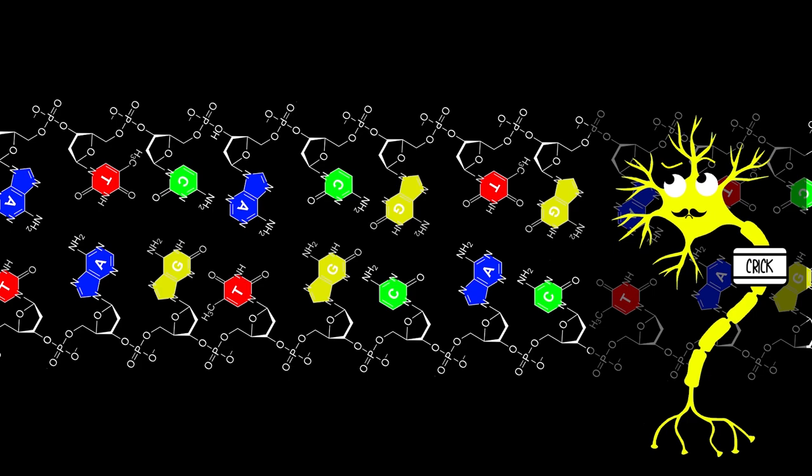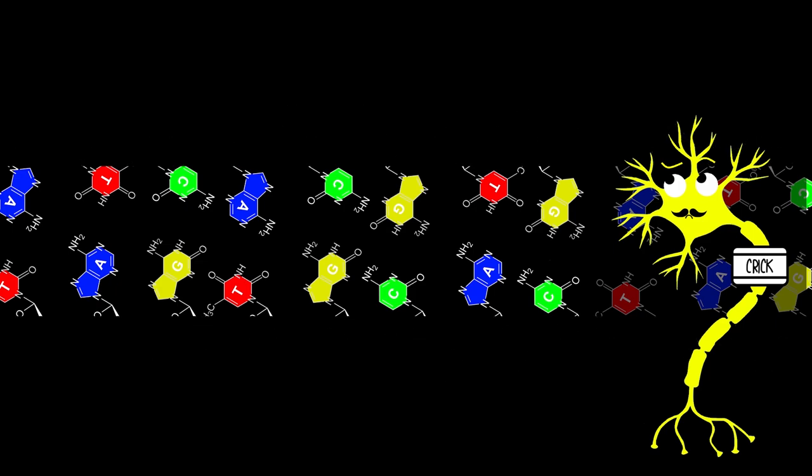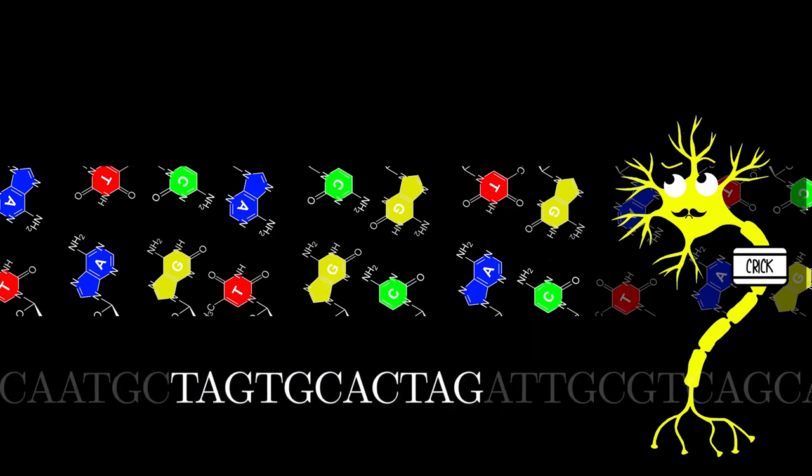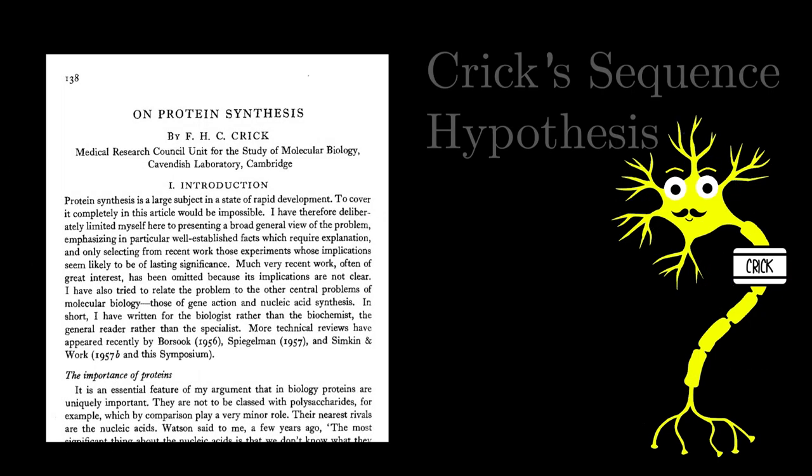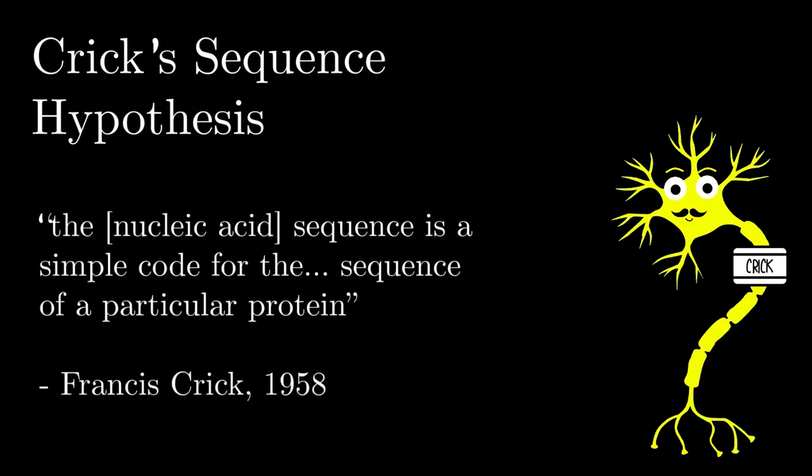In fact, it was none other than Crick himself who realized that the information that DNA contained was the instructions to make proteins. He simply looked at the way that DNA was structured. And he noticed that if you focused only on the nitrogenous basis, then the DNA looked like a sort of message, a sort of code. Like maybe ATG was an instruction for the cell to start making a protein. And maybe CAC meant to make a different part of a protein. And in 1958, just five years after proposing his double helix model, Francis Crick published his sequence hypothesis for protein synthesis, in which he stated in his own words, the nucleic acid sequence is a simple code for the sequence of a particular protein.